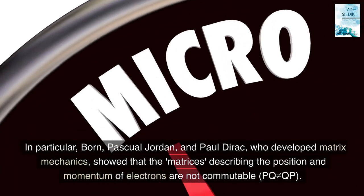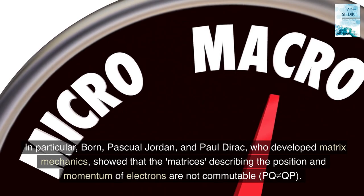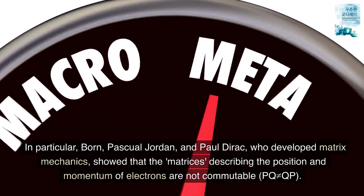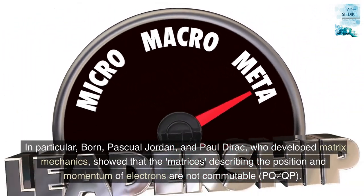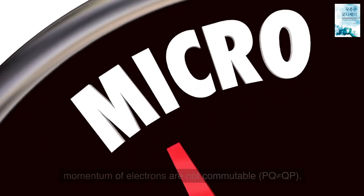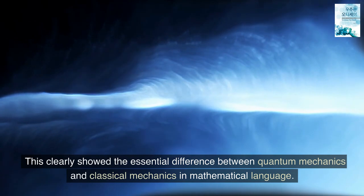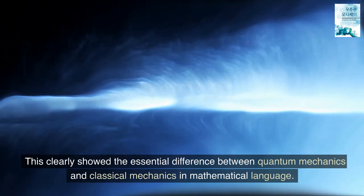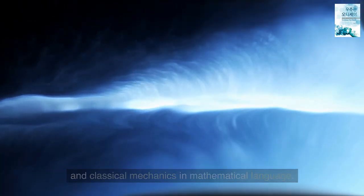In particular, Born, Pascal Jordan, and Paul Dirac, who developed matrix mechanics, showed that the matrices describing the position and momentum of electrons are not commutable. PQ does not equal QP. This clearly showed the essential difference between quantum mechanics and classical mechanics in mathematical language.